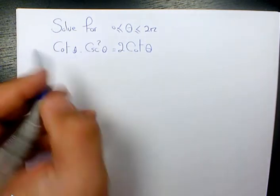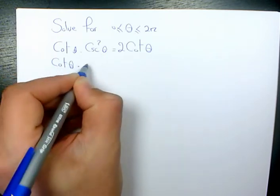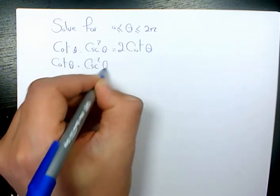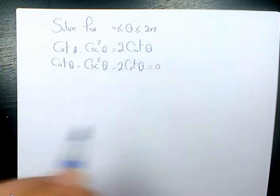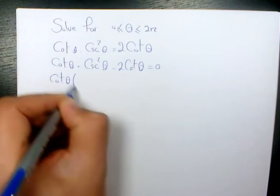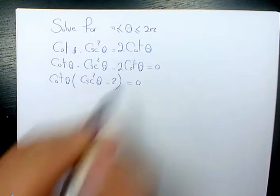First thing I want to do, I'm going to move the right hand side to the left hand side. So we have cotangent theta times cosecant squared theta minus 2 cotangent theta equals 0. Then I need to factor cotangent theta. It's going to be cosecant squared theta minus 2 equals 0.